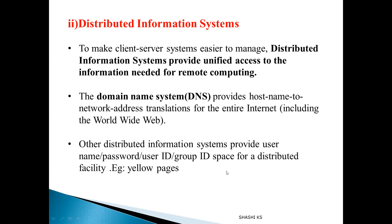Other ways distributed information systems can be used is with a combination of username, password, user ID, or group ID — these enable easier management of client-server systems. For example, Sun Microsystems introduced something called Yellow Pages, also known as Network Information Service, which has been adopted by the industry. All usernames, host names, and printer information are stored in this Yellow Pages directory, and when a user wants to access a resource, it is compared against this directory for authentication.